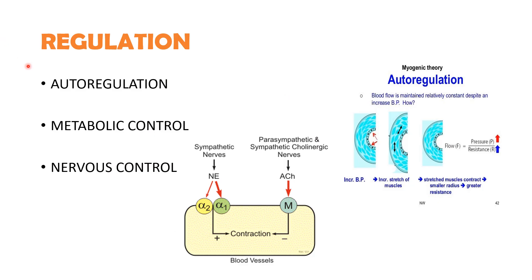Regulation of muscle blood flow occurs by three mechanisms: autoregulation, metabolic control and nervous control. Autoregulation means maintaining its own blood flow without change, despite changing blood pressure. It is well established in the skeletal muscles, like the kidney, heart and brain. The precapillary sphincter vessels in the skeletal muscle have high basal myogenic tone. A rise in transmural pressure excites a stretch-induced contraction of the sphincter smooth muscles, which by raising the precapillary vessel tone protects the capillaries from an undue rise of pressure, keeping flow constant because both pressure and resistance increase equally.